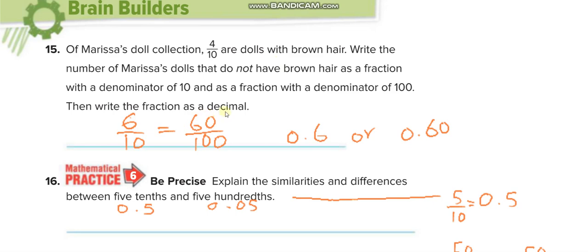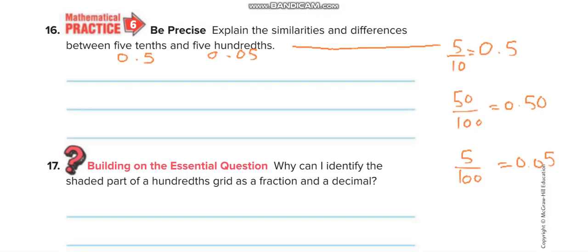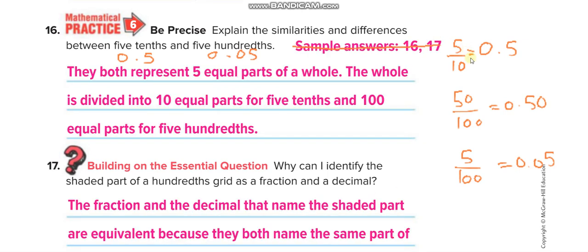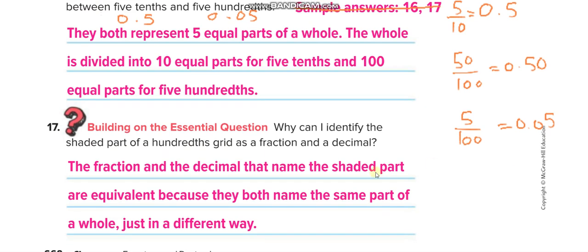Explain the similarities and differences between 5 tenths and 5 hundredths. This is 0.5, and 5 hundredths is 0.05. So 0.05 is less than 0.5, but 0.5 is equal to 0.50. These are the fractions for them, and here is some explanation.